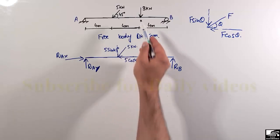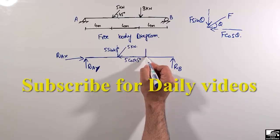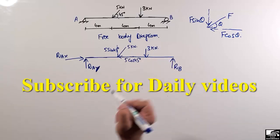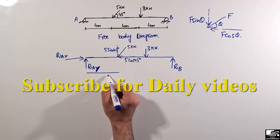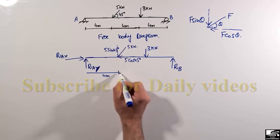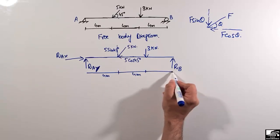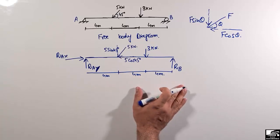The 3 kilonewton load is also acting at another point. The dimensions along the beam are 4 meters, 4 meters, and 4 meters. This completes the free body diagram, and now it is easy to find the support reactions.